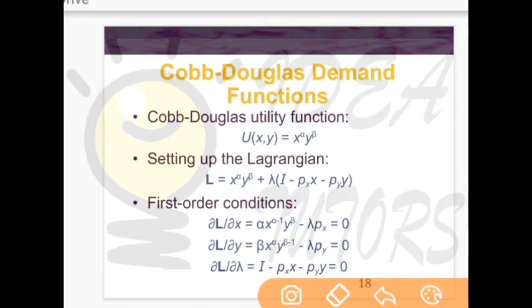Suppose your consumer has this utility function of the form X to the power alpha multiplied by Y to the power beta. This is the general form of the Cobb-Douglas utility function.